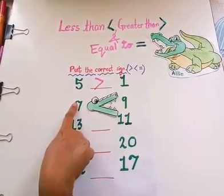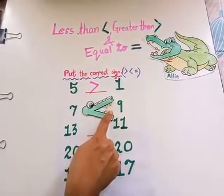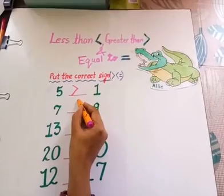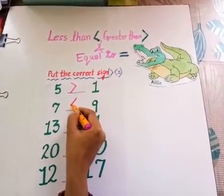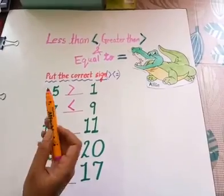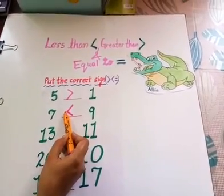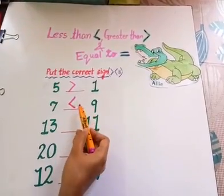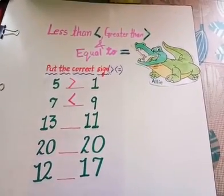7 is less than 9. For less than sign, we use this sign. See, this side's mouth is closed because Ellie likes to eat the bigger number. Now tell me children, which number will Ellie eat?